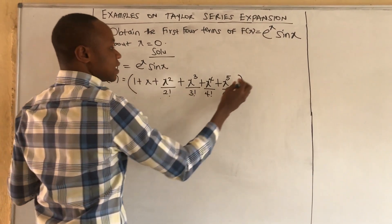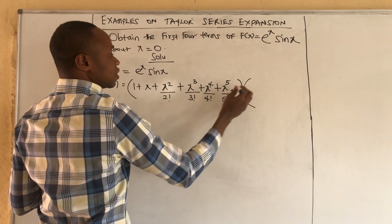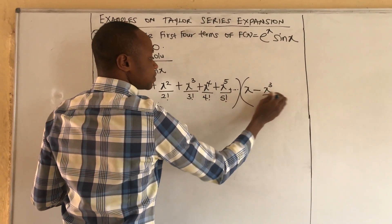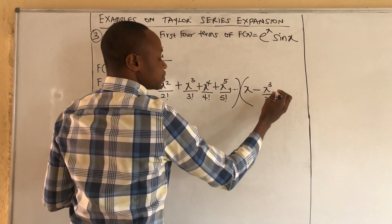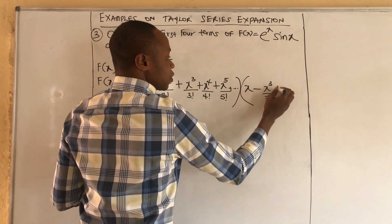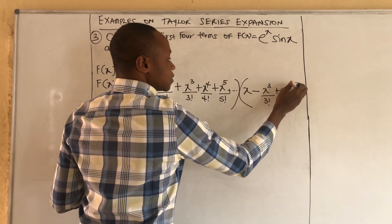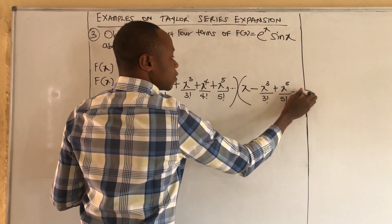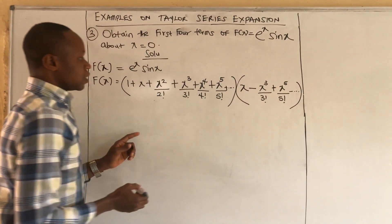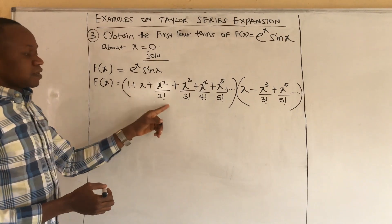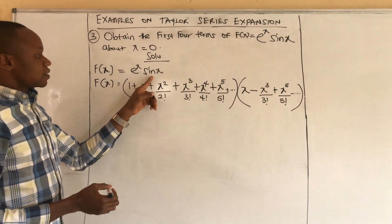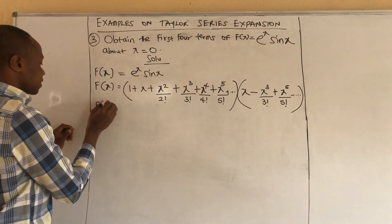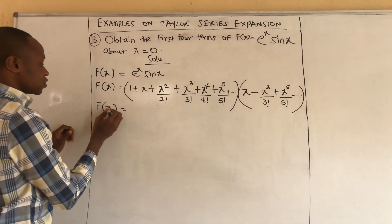And sine x is: x − x³/3! + x⁵/5! plus other terms. We write it in a better form because we'll be multiplying.